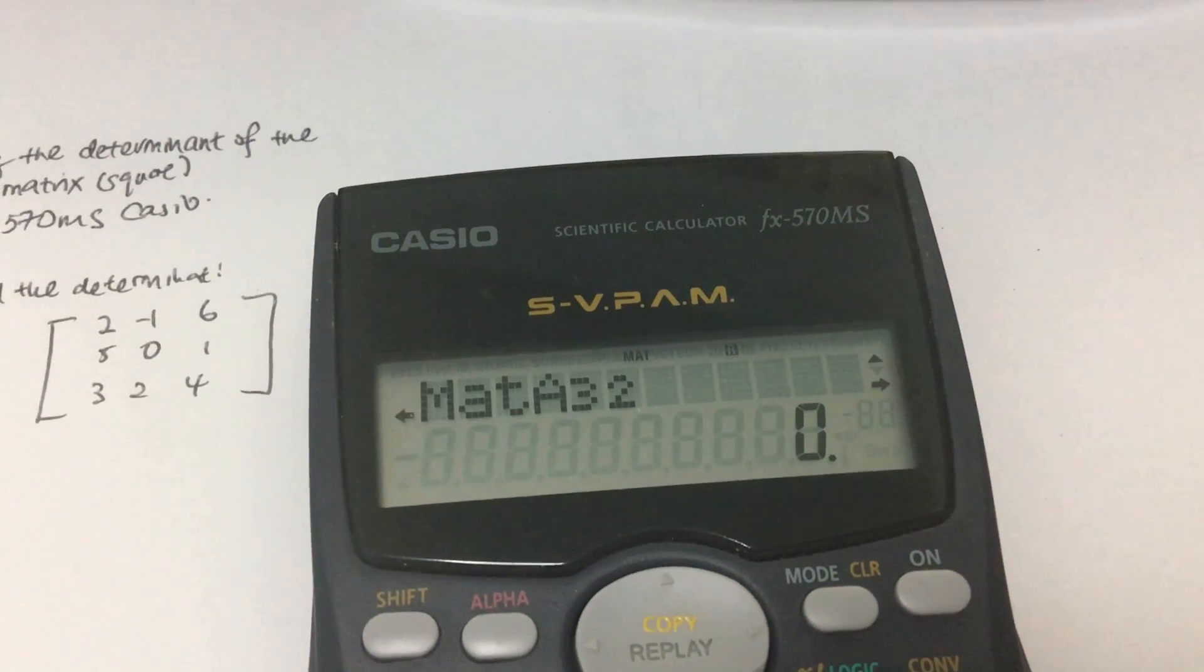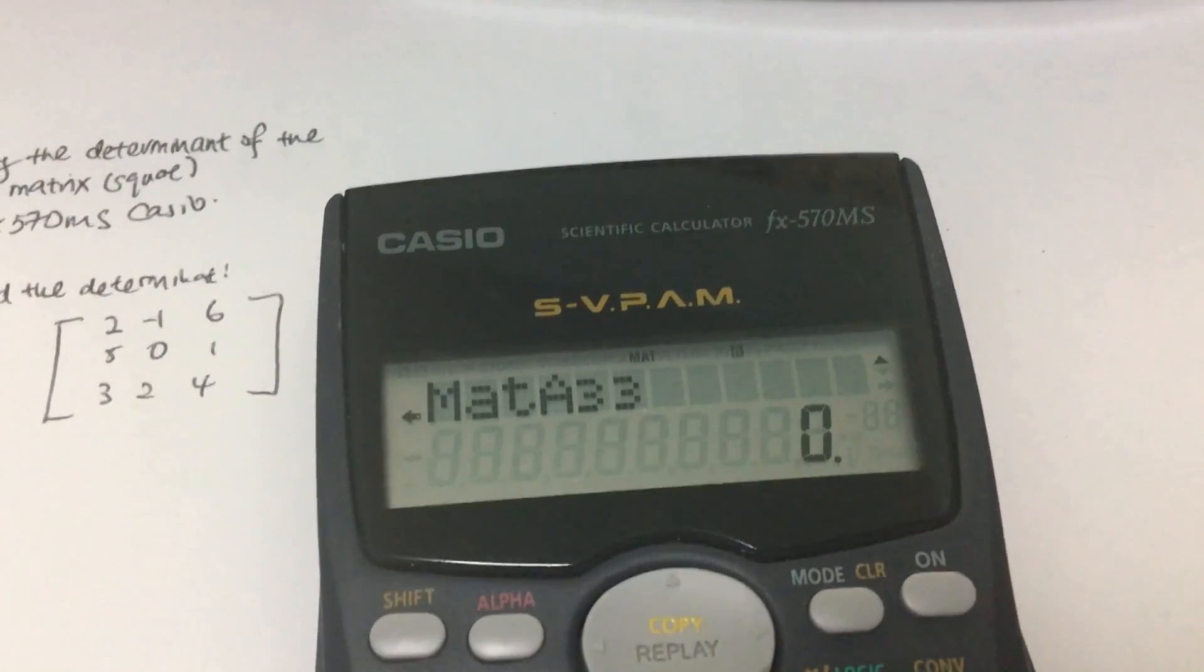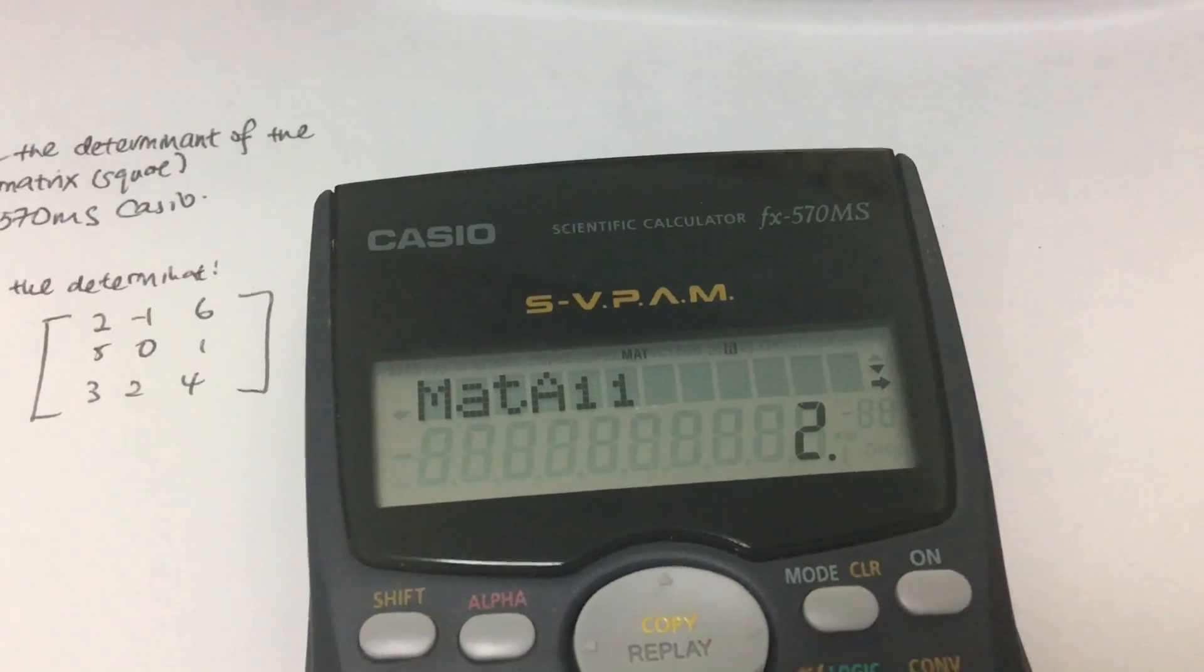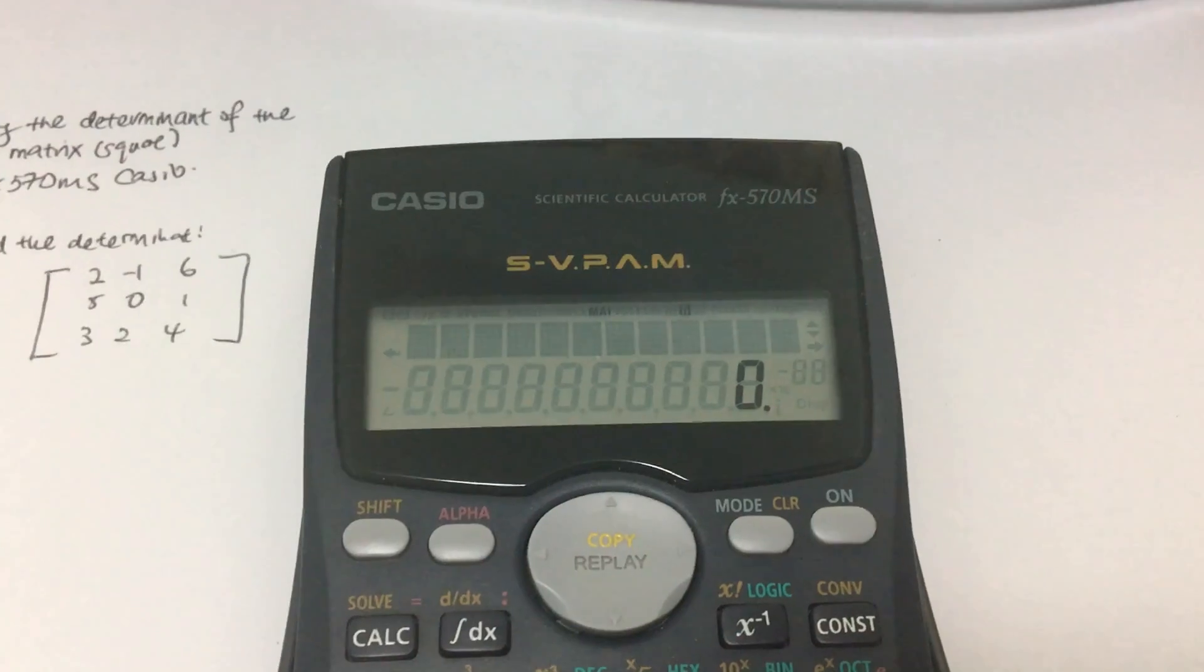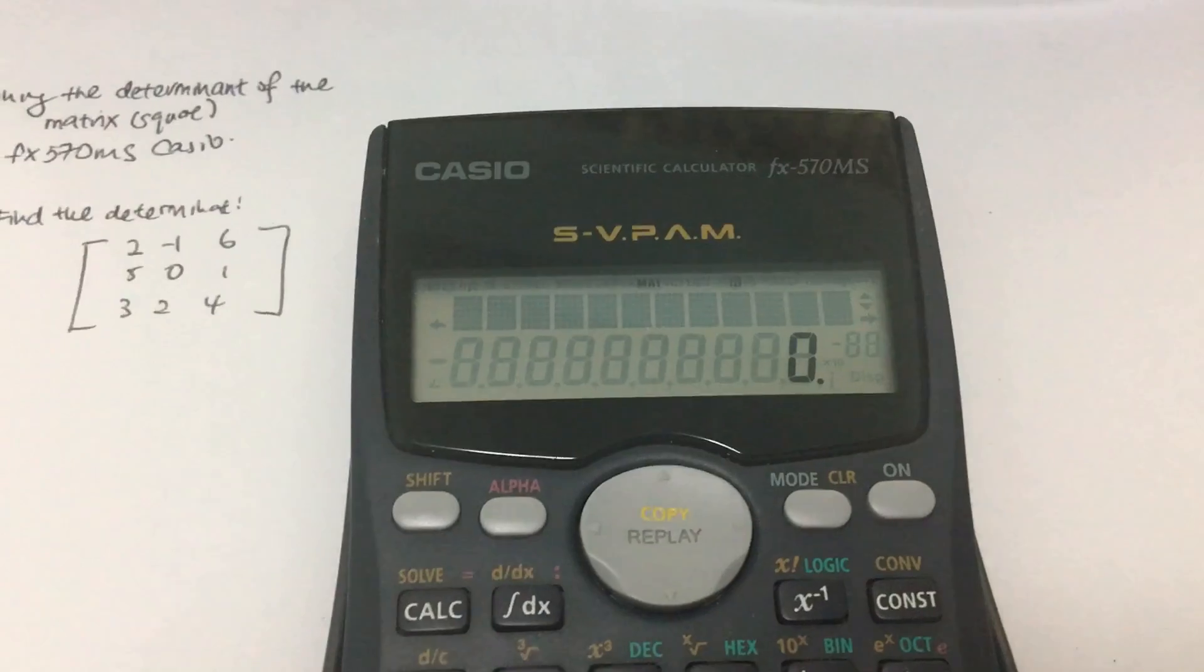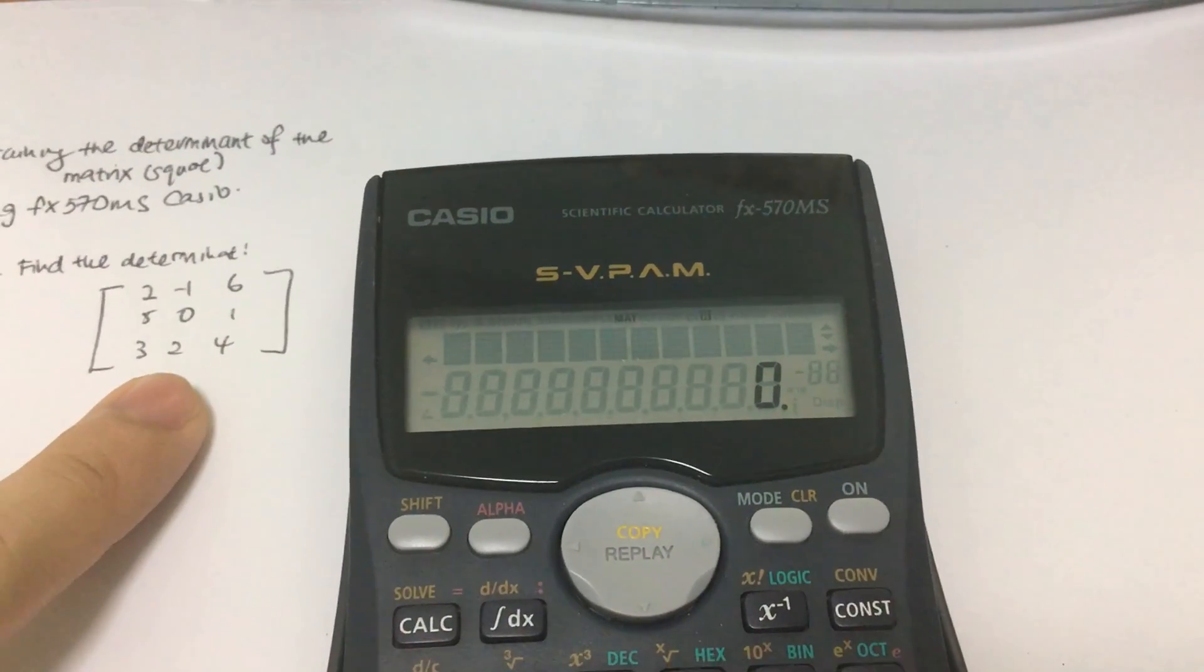And then I will just key in row three, column one, row three, column two, and then row three, column three. After keying in the values in the matrix itself,